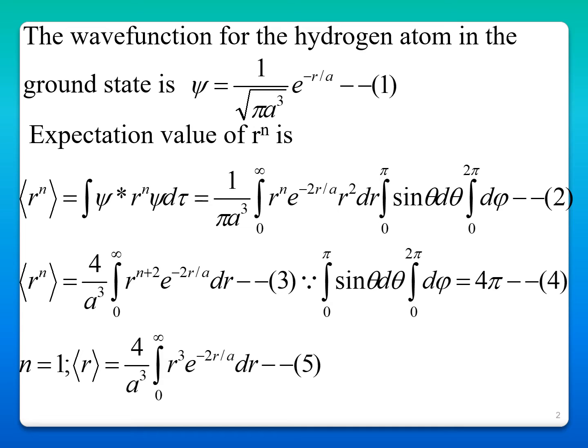Now, in our case we have to find the expectation value of r and expectation value of r squared. To find the expectation value of r, n is equal to 1. So putting n equal to 1, the expectation value of r is equal to 4 by a³, integral from 0 to infinity r³ e power minus 2r by a, dr.